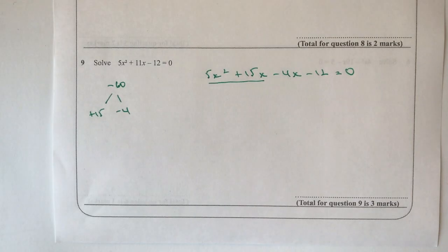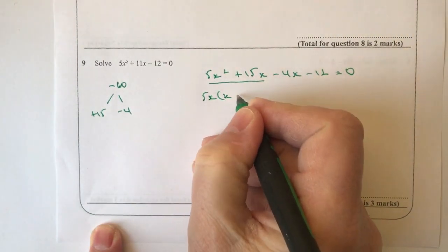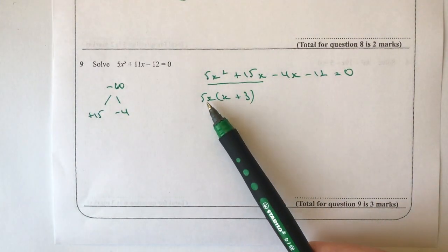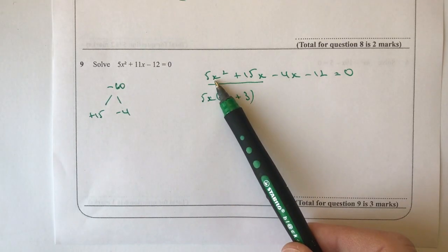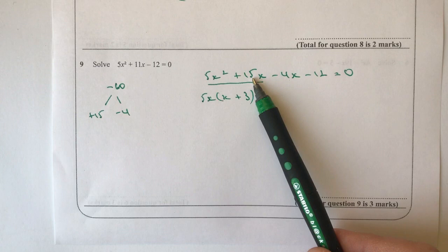So rather than writing that I'm going to write 5x and then (x + 3) in brackets. So if we have a look at that just to check, 5x times x is 5x squared, and then 5x times plus 3 is plus 15x.